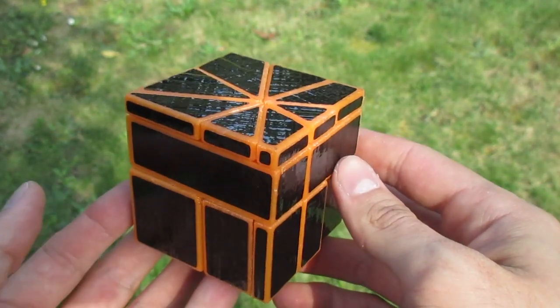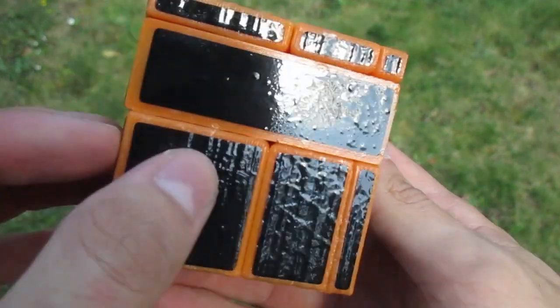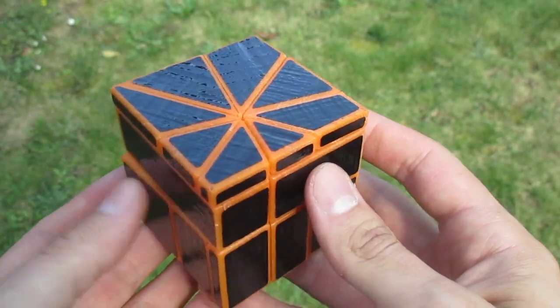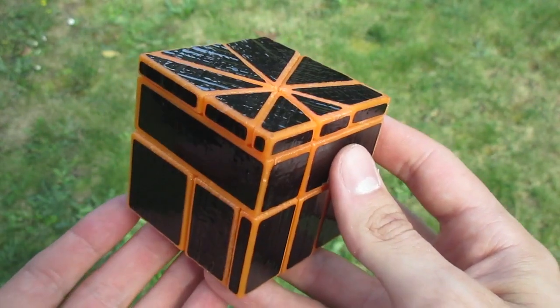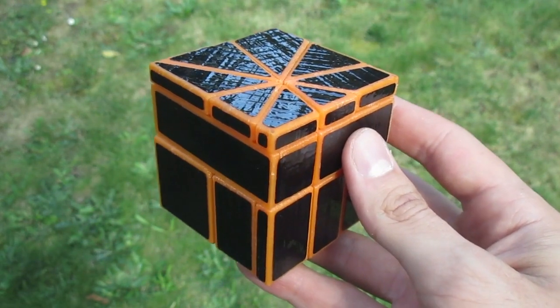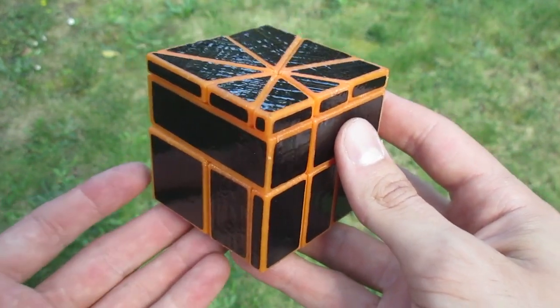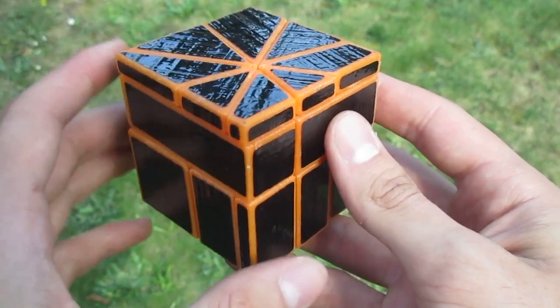Recently I bought new filament which is this beautiful orange one and I wanted to try to print a puzzle in a different colored plastic than black or white which is what I usually use. Therefore I thought that building a mirror puzzle would be the perfect design as that's a puzzle that is solved by shape only which means that it only needs one color.